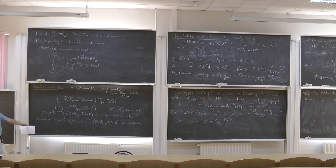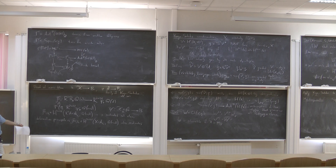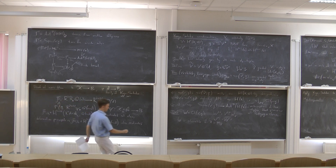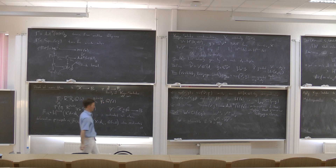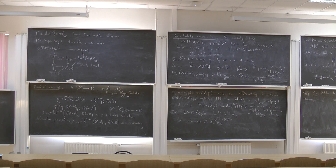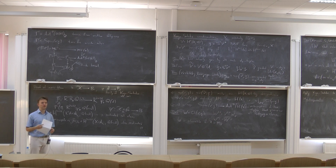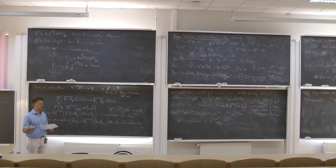Then there is a deformation principle: if I have a global section of some local system — a variation of Hodge structures — and I know that over one point the class is motivated, then it will be motivated over all other points. By the deformation principle, μ_i over the point b₁, which is now in H^{2n+2D} of the fiber over b₁ — which is X times some abelian variety over b₁ — will also be motivated. That gives me an embedding of the corresponding André motives. Moreover, I can also mention that the fact that a motive is abelian implies more conjectures. We proved all Hodge classes are absolute Hodge, but there are more conjectures about other cohomology theories.